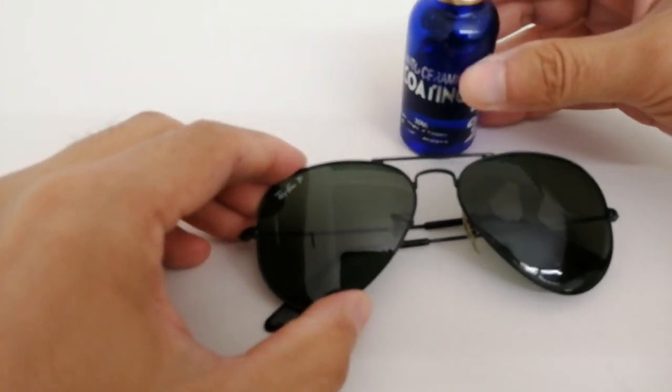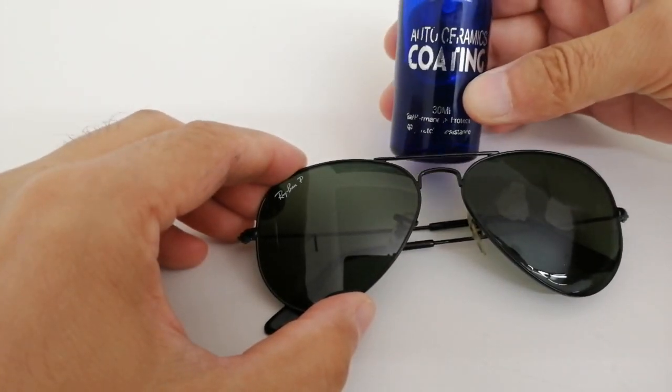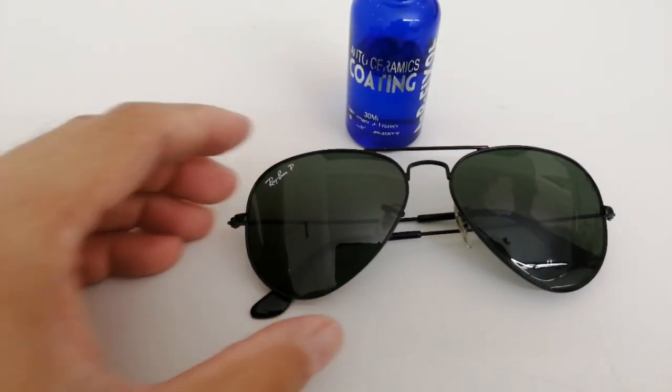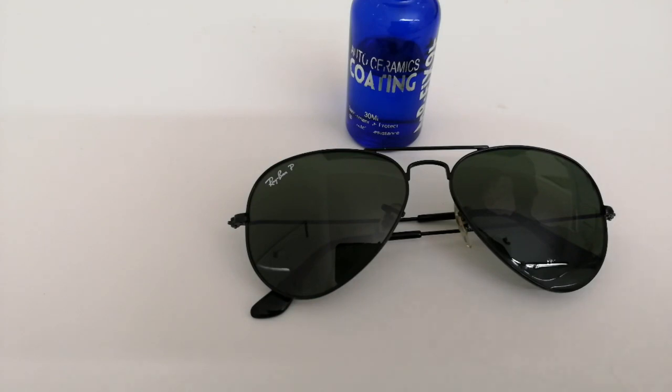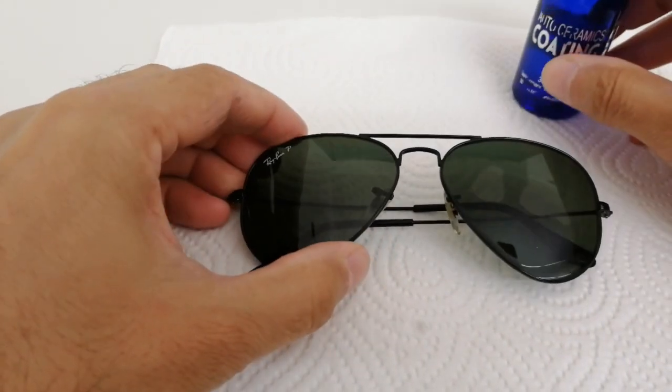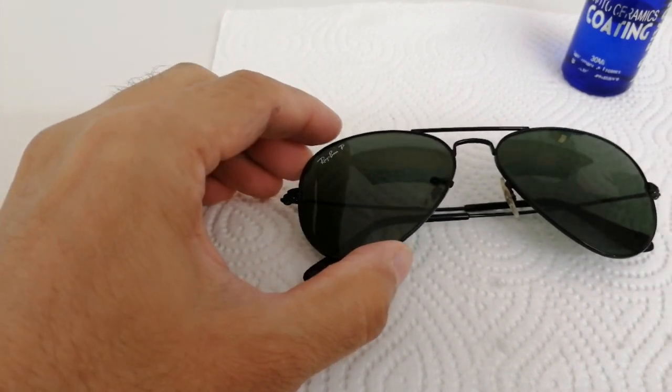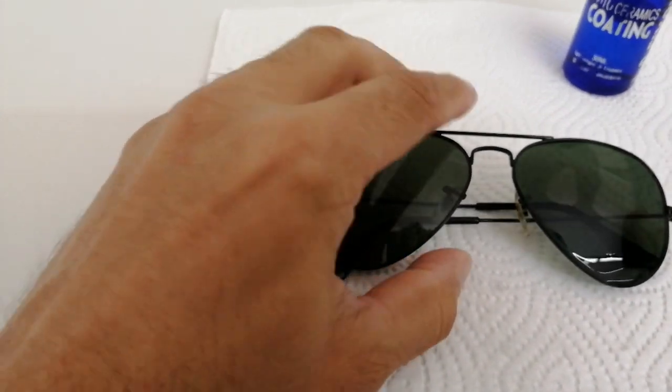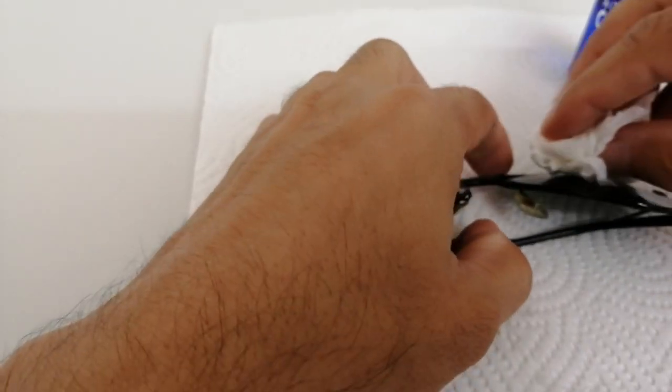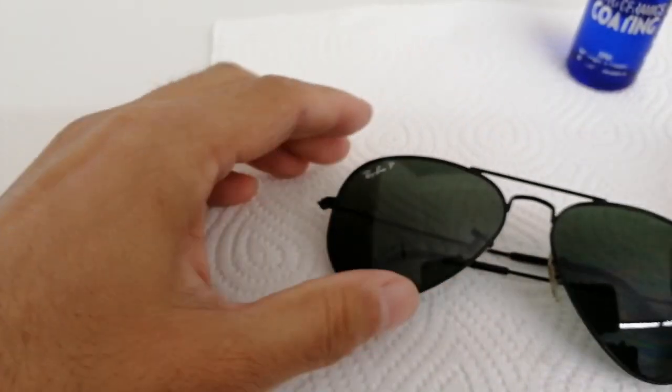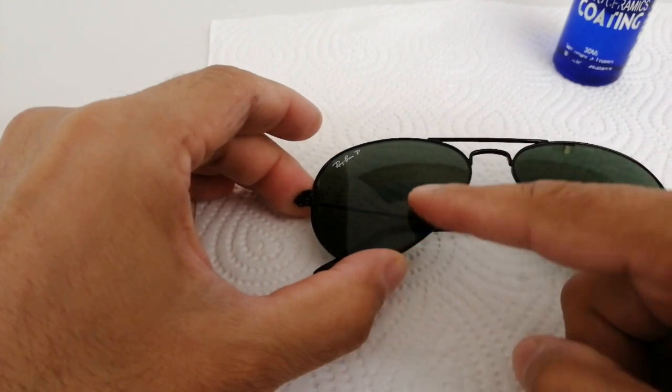I'm going to use auto ceramic coating—it's a nano coating. We're going to coat the surface of the glasses with the nano hydrophobic coating.